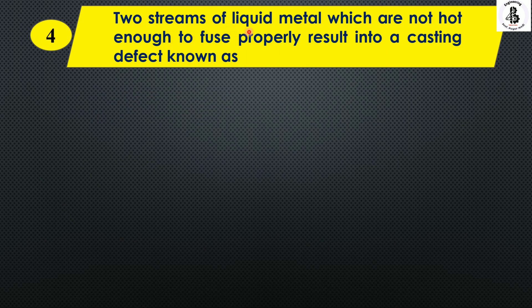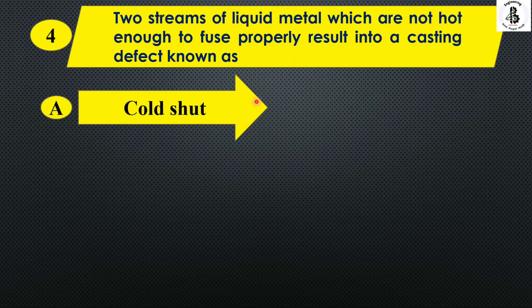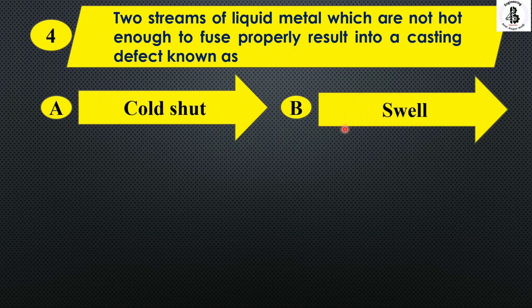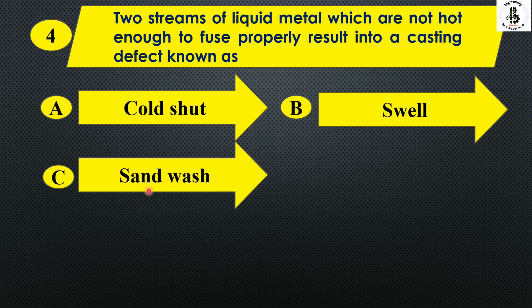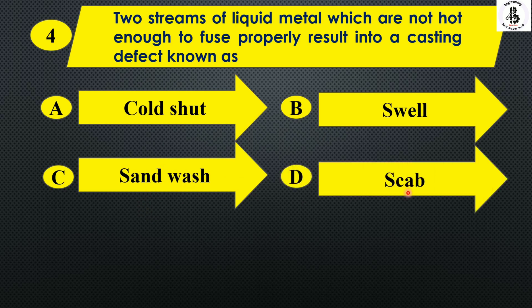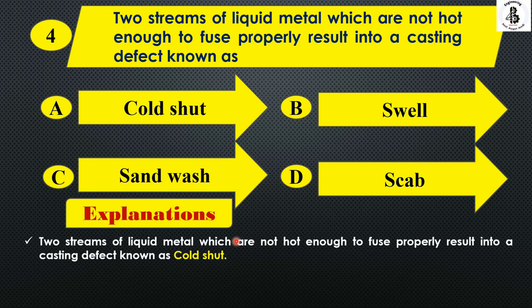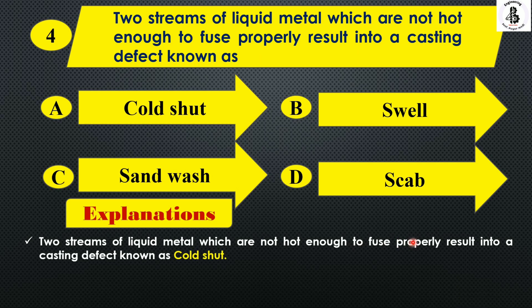Two streams of liquid metal which are not hot enough to fuse properly result in a casting defect known as: Option A cold shot, Option B swell, Option C sand wash, and Option D scab. Two streams of liquid metal not hot enough to fuse properly result in a defect known as cold shots. So Option A.